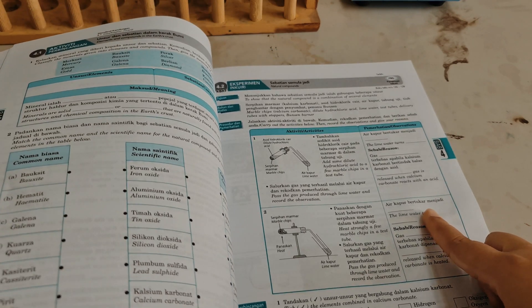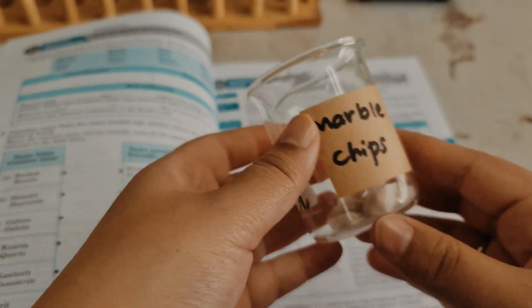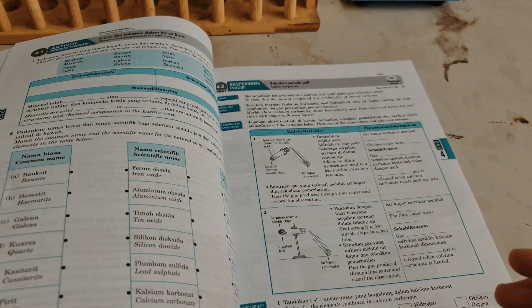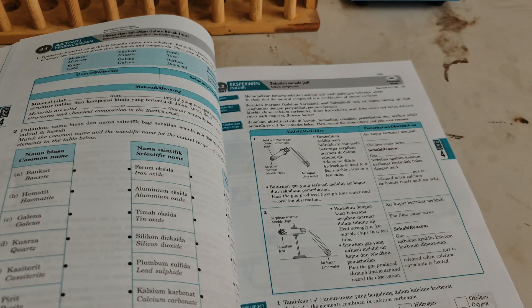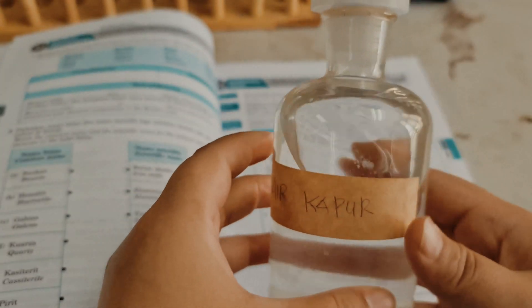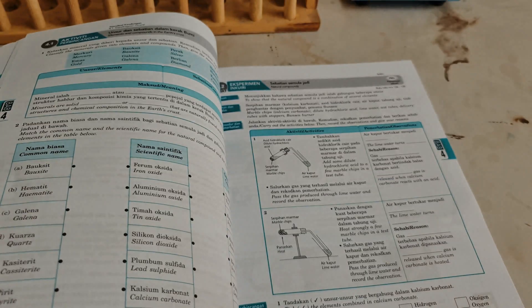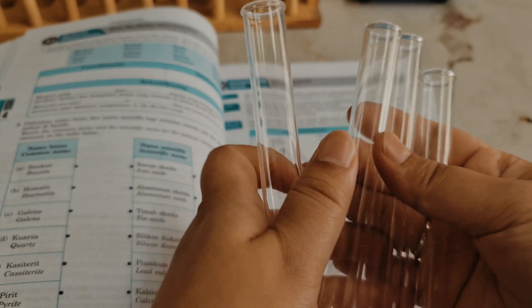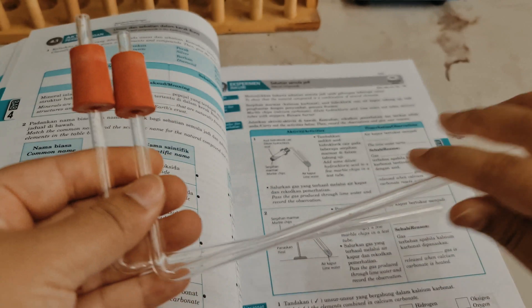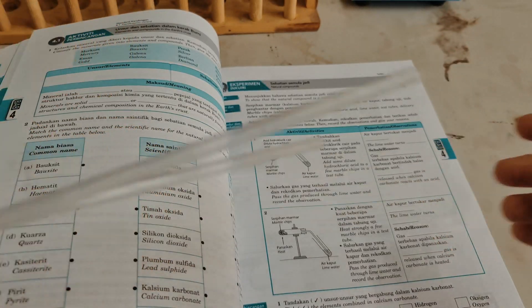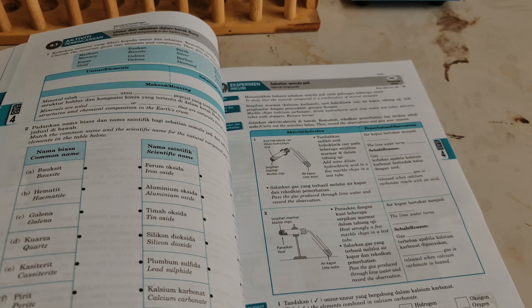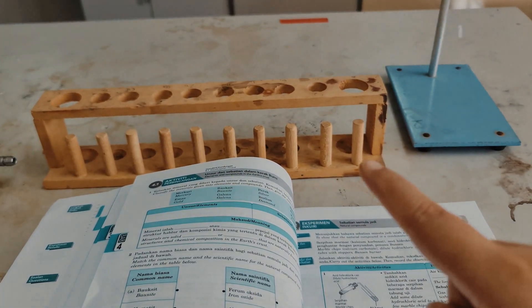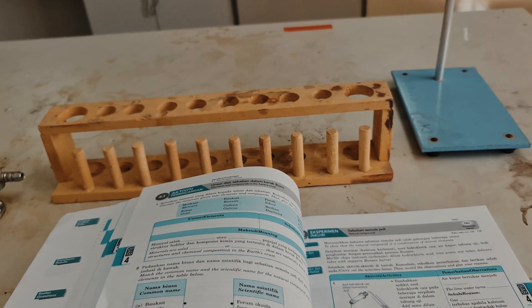So in this experiment, we need some marble chips, which is actually calcium carbonate, and diluted hydrochloric acid, limewater, test tubes, delivery tubes with stopper, and Bunsen burner. We're also going to need a retort stand here and some rack for the test tubes.